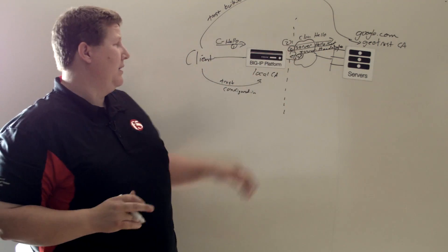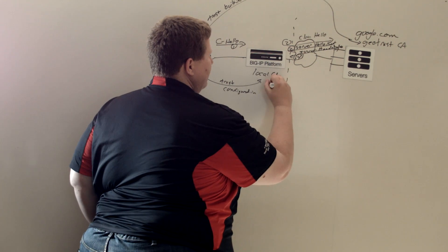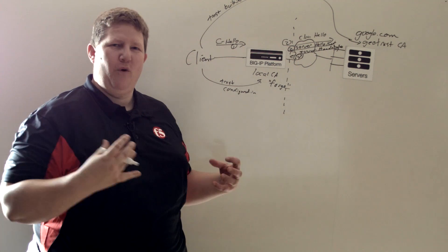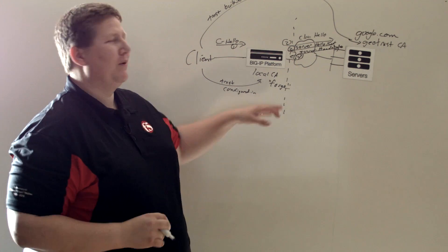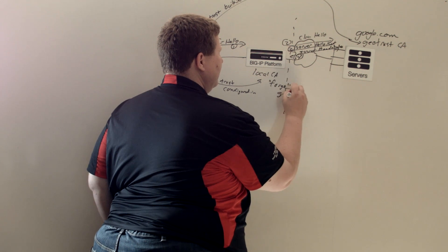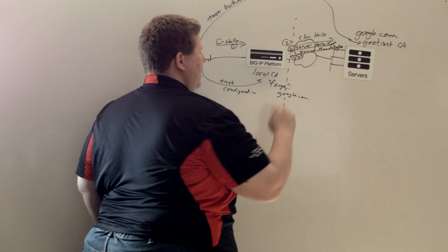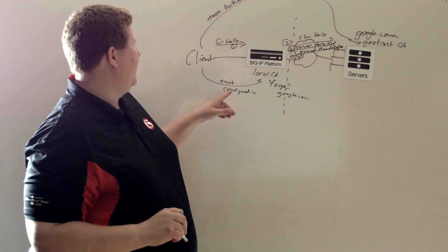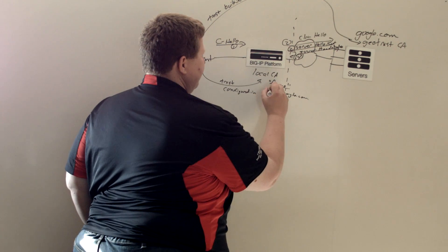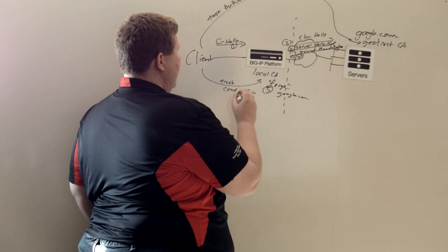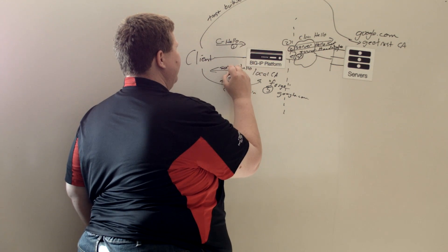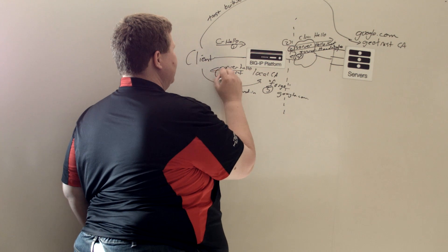At this point, I forge — you think about Lord of the Rings and forging the one ring — so here we're forging a certificate for Google.com. And we are doing that with the trust relationship with this local CA. So this is step five: we forge that cert. And then we pass on the server hello and cert, and that's step six.